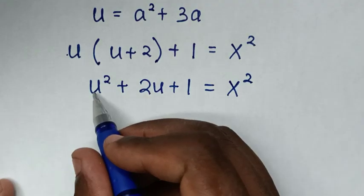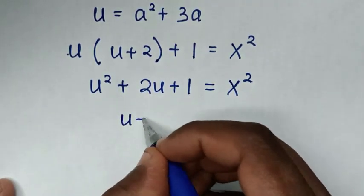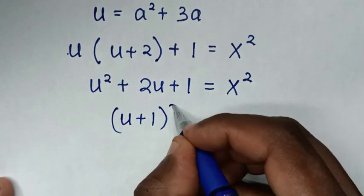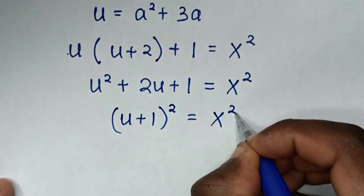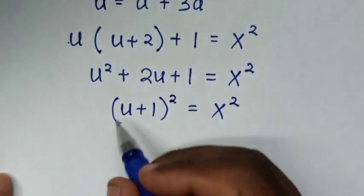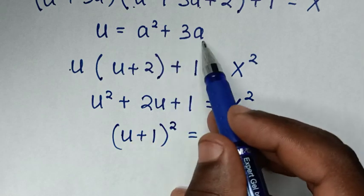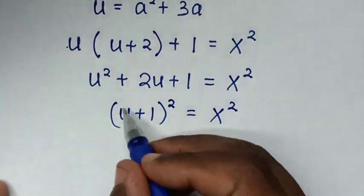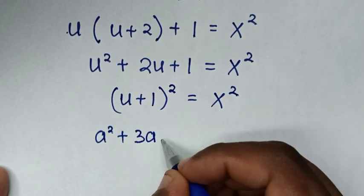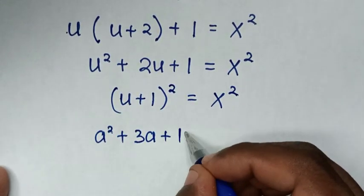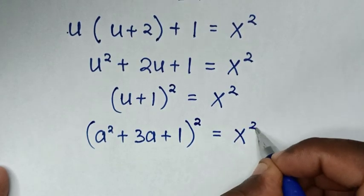Then from this u²+2u+1, this is the same as (u+1)² equals x squared. But before we let u equal a²+3a, so here u will substitute as a²+3a, then plus 1, all squared, is equal to x squared.